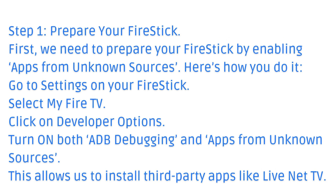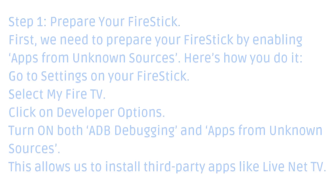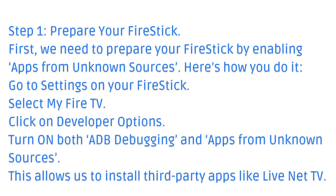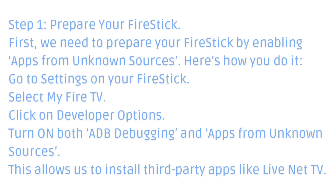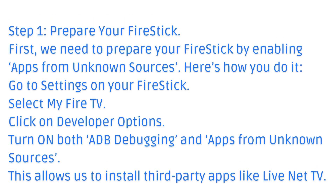Step 1: Prepare your Fire Stick. First, we need to prepare your Fire Stick by enabling Apps from Unknown Sources. Here's how you do it. Go to Settings on your Fire Stick, select My Fire TV, click on Developer Options, and turn on both ADB Debugging and Apps from Unknown Sources. This allows us to install third-party apps like LiveNet TV.